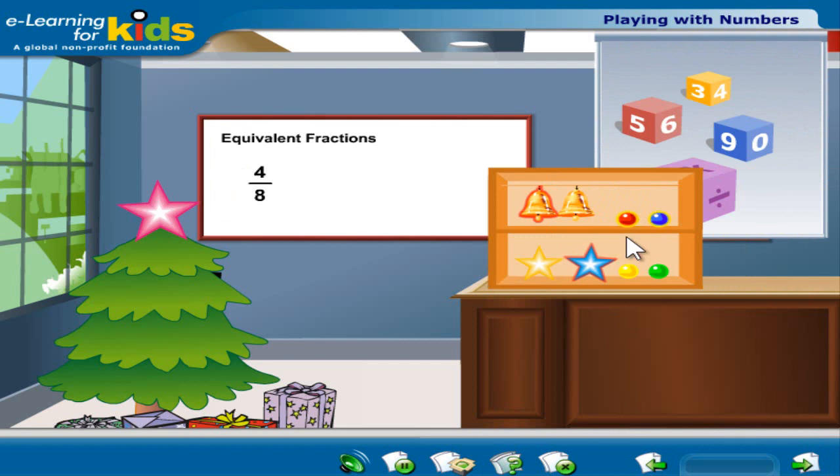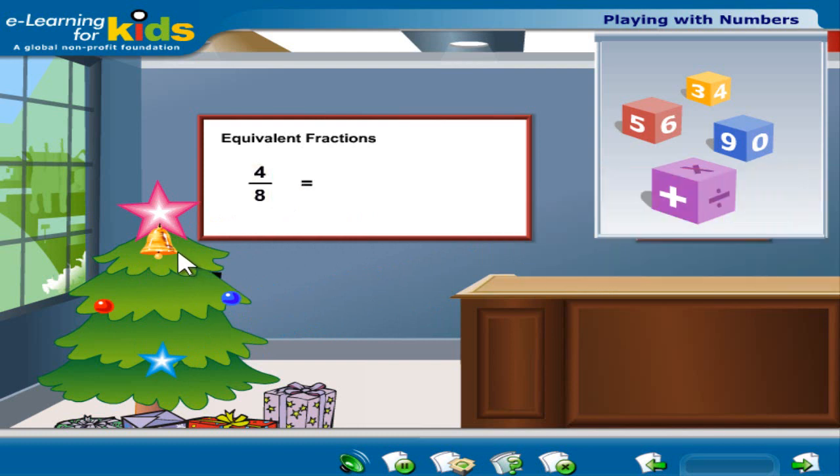Take a look at the fractions on the screen. 4 by 8 can be simplified by dividing 4 by 8. This gives us 1 by 2 finally, or half. As we divide, we notice that each fraction is a half. For example, 4 by 8 means half of the total, which is 8. Therefore, each of these fractions are equivalent.